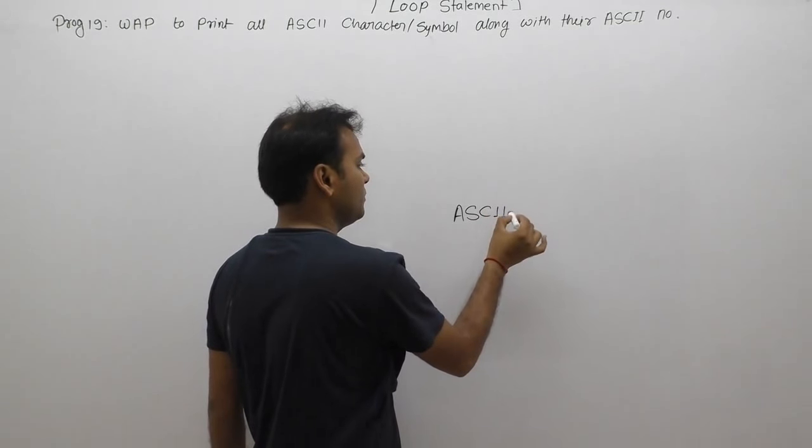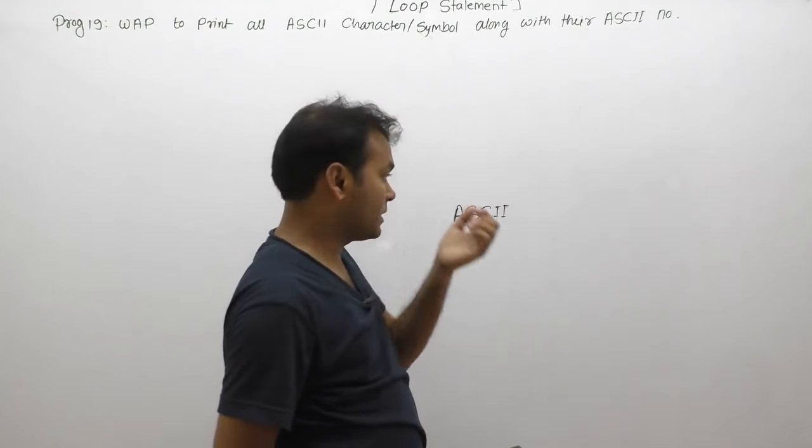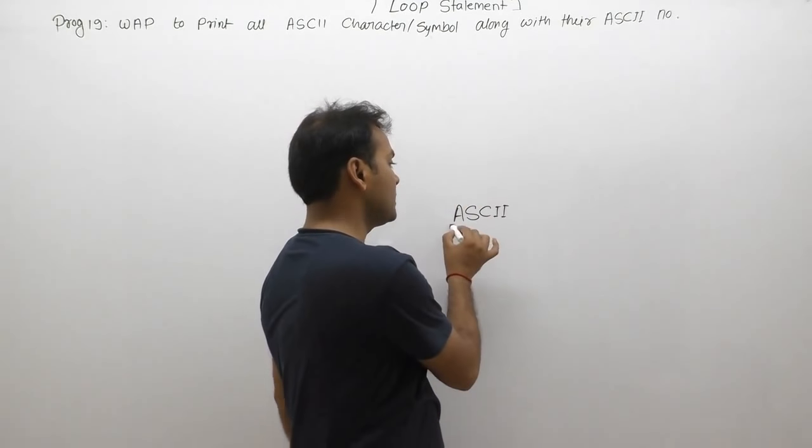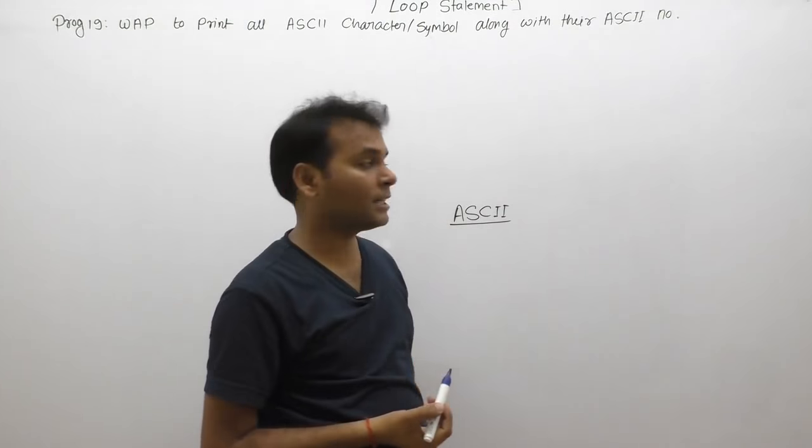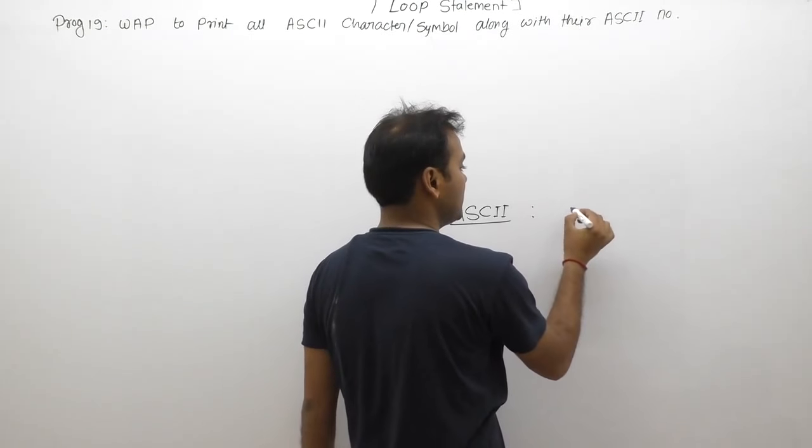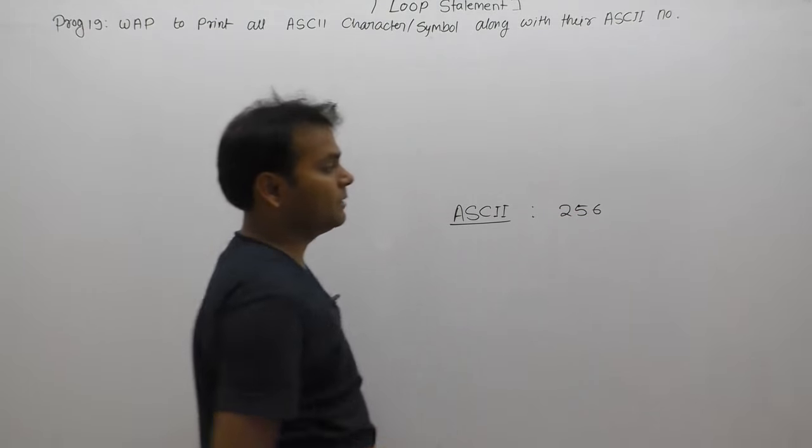We are discussing this point during data types or beginning of C, or basics of C. C language - what type of character set does it support? Simply ASCII character set. According to the total number in C language, there are 256 characters available in C.